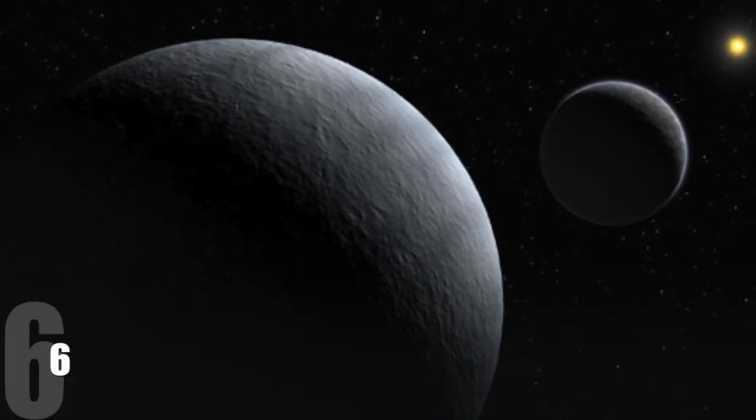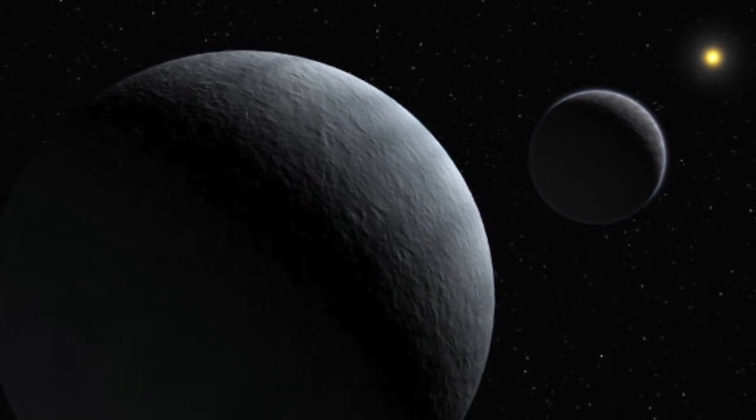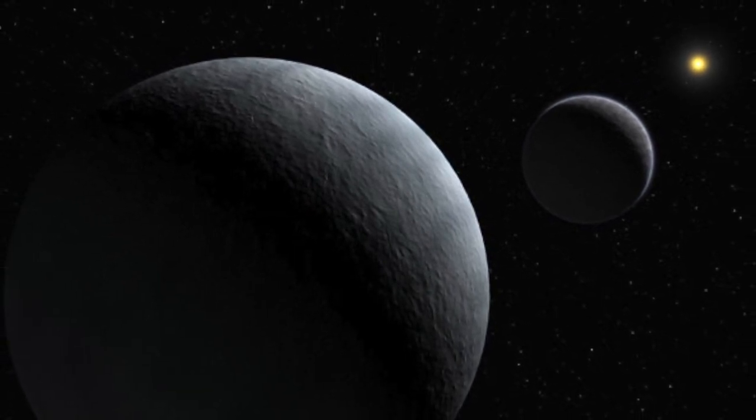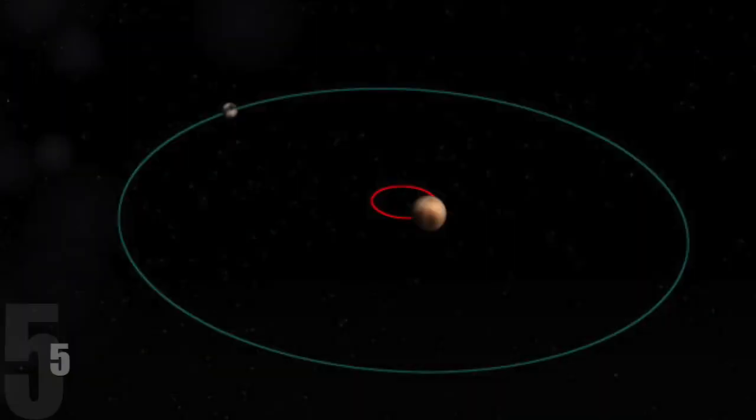Charon and Pluto are gravitationally locked, and always present the same face towards each other as they orbit a common center of mass located somewhere between them. 5.